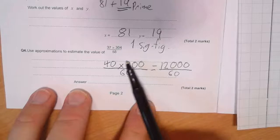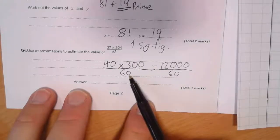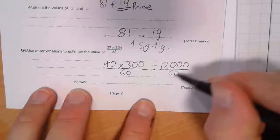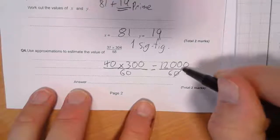So I've rounded each of these to one significant figure, divided by 60. So that gives me 12,000 divided by 60.